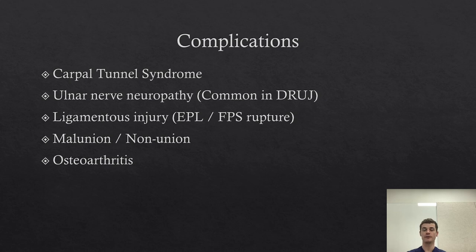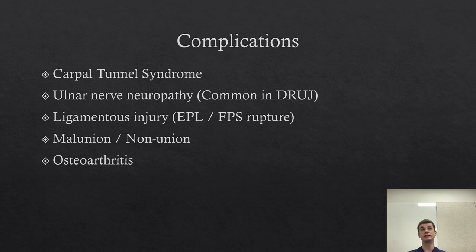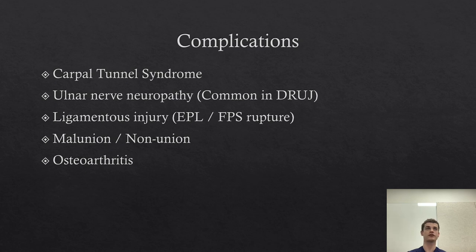Ulnar nerve neuropathy is another complication that can occur, often seen in ligamentous injuries but also in distal radius fractures. Tendon injuries — for example to the extensor pollicis longus or flexor pollicis — are also common complications, particularly in open reduction and internal fixation owing to the movement of those tendons across the plate.